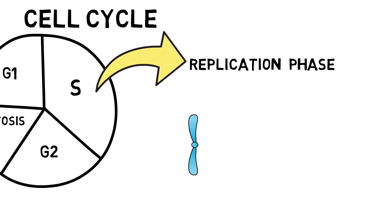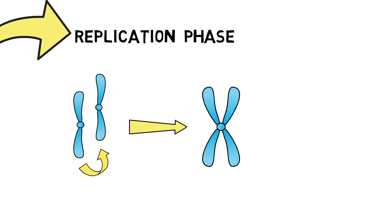During this phase, every chromosome is copied once and the copy is joined to the original at the center, making an X-shaped structure.